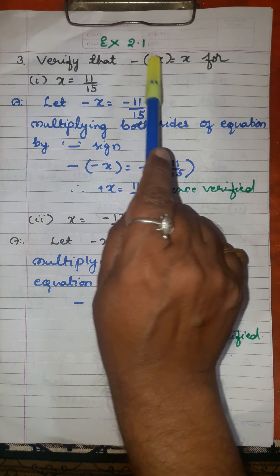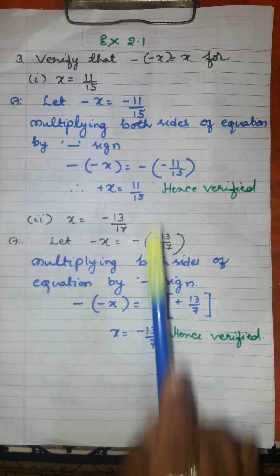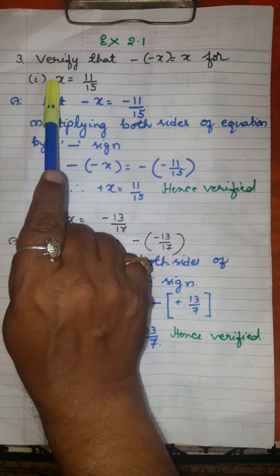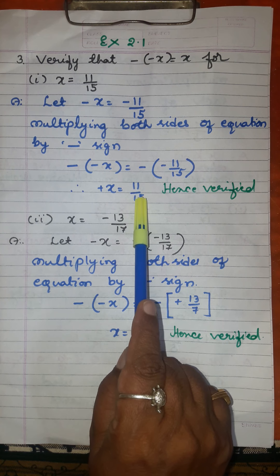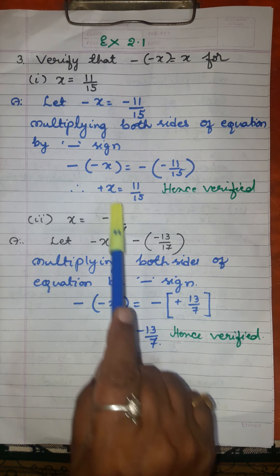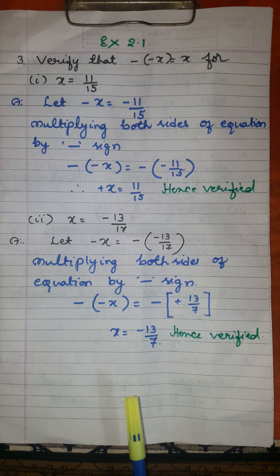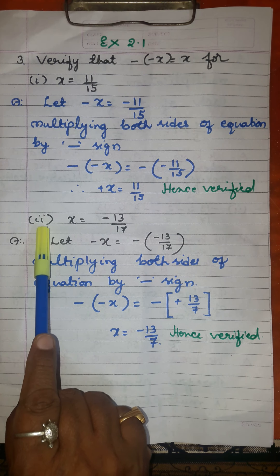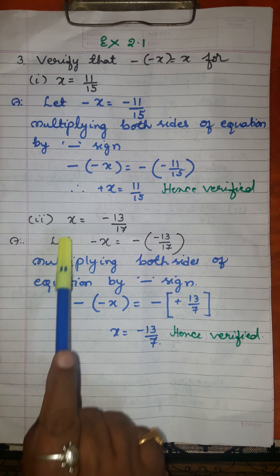So minus of minus X is equal to plus X. What is the value of plus X? 11 over 15. What we have got here? 11 over 15. Which is nothing but plus X. Now let us look at the second sub-part of the third main.